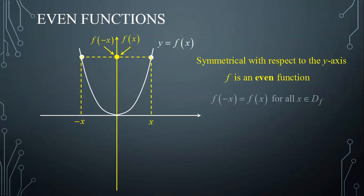Consequently, a function is even if and only if f(-x) is equal to f(x) for all x in the domain of f.